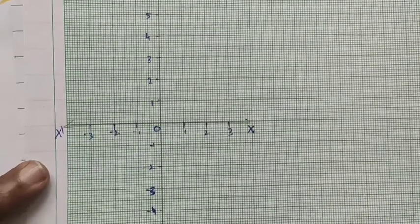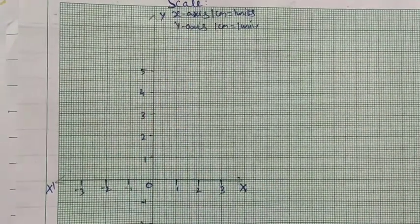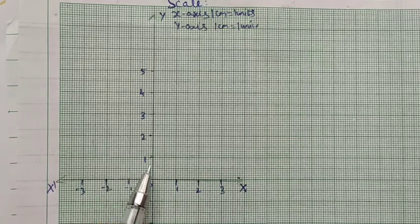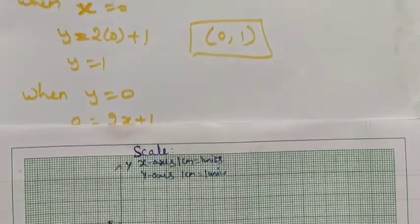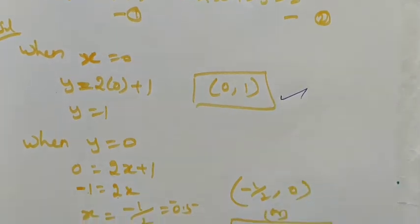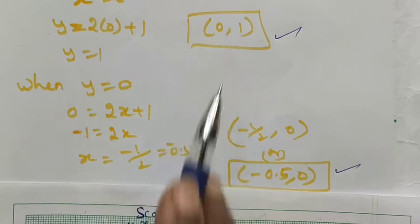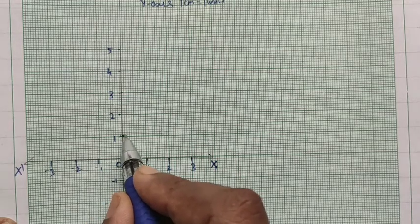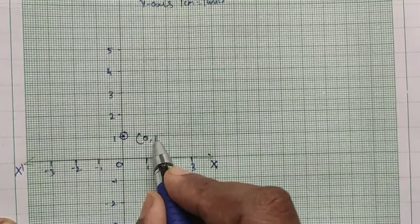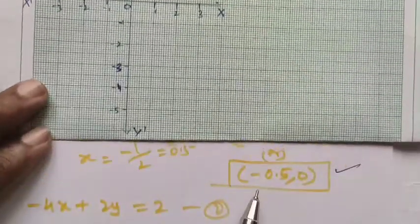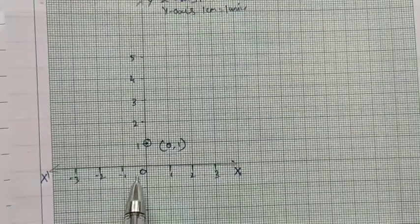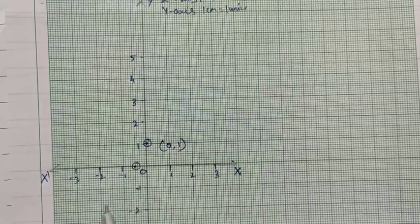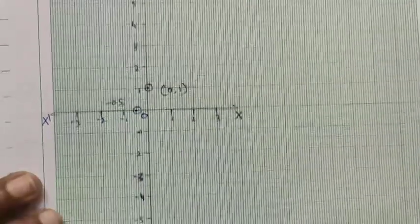Now let's look at the graph. I'm taking the x and y axes with a scale factor of 1 centimeter equal to 1 unit on both axes. The ordered pairs for equation 1 are (0, 1) and (minus 0.5, 0). First, plotting (0, 1): x is 0 and y is 1, so this point lies on the y-axis. Then minus 0.5 on the x-axis gives the point (minus 0.5, 0).